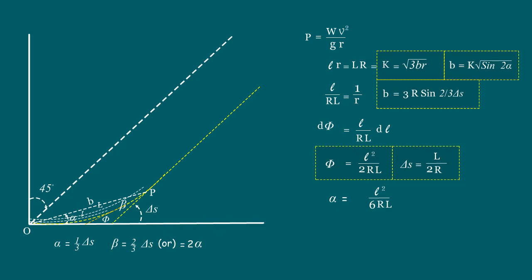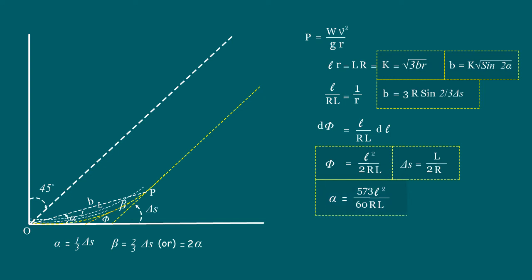To convert this into degrees, multiply with 180/π. That gives 180L²/(π·6RL). To convert this into minutes, multiply with 60. Now, 6 and 60 cancel to give 10, so alpha equals 1800L²/(π·RL), which is equivalent to 573L²/RL in minutes. If the alpha value is high and we need the value in degrees, then alpha equals 573L²/(60RL), which is in degrees.